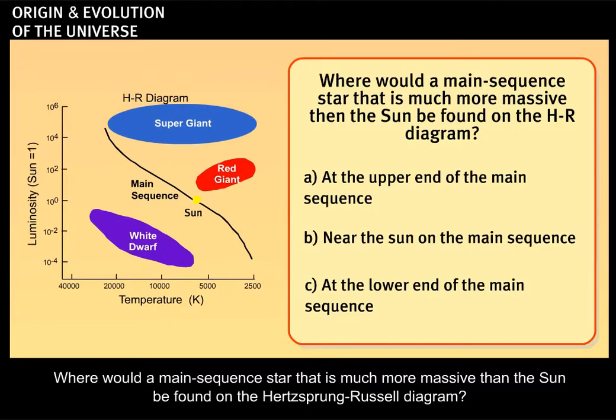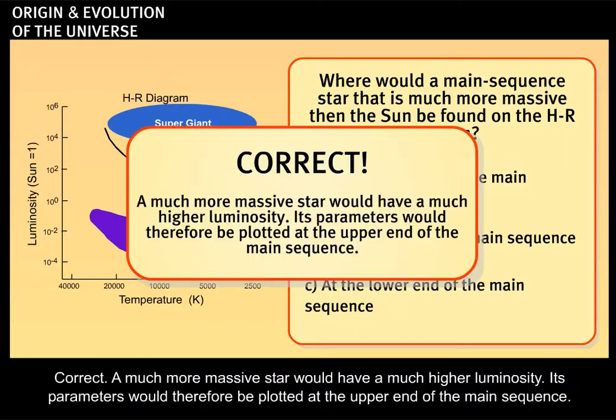Where would a main-sequence star that is much more massive than the Sun be found on the Hertzsprung-Russell diagram? Correct. A much more massive star would have a much higher luminosity. Its parameters would therefore be plotted at the upper end of the main sequence.